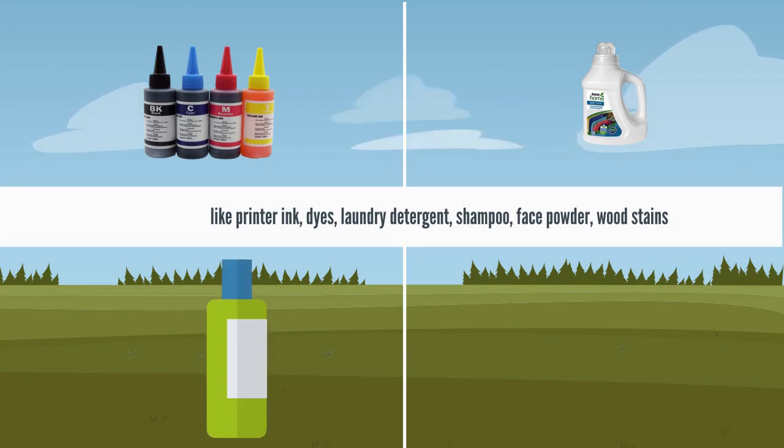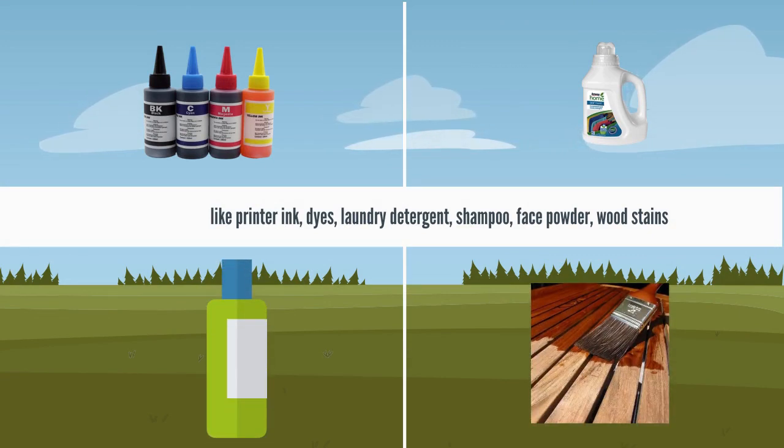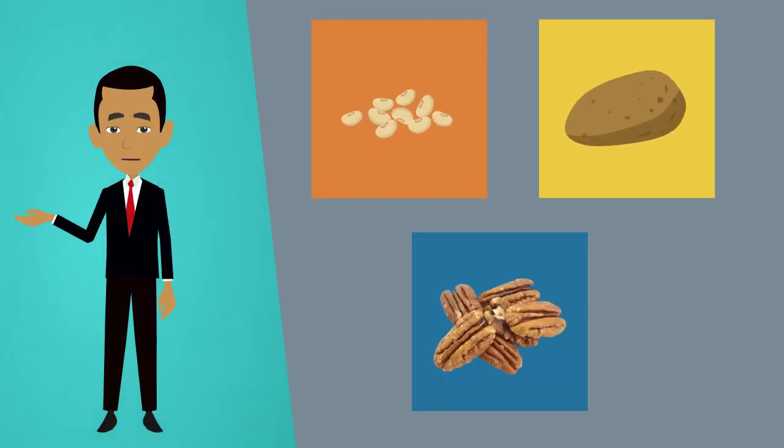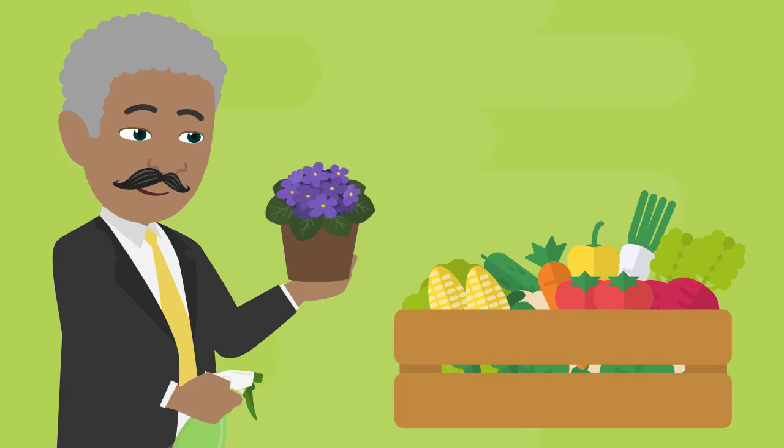These included shampoo, face powder, and wood stains. In addition to his peanut recipes, he also invented dozens of uses for soybeans, sweet potatoes, and pecans. Carver's work continues to influence the food and agricultural industry.